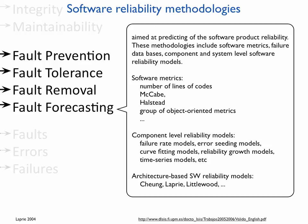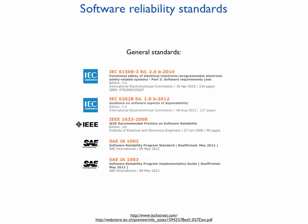Those are the four main groups of software reliability methodologies — fault prevention, fault tolerance, fault removal, and fault forecasting — and I hope this gives at least some intuition about what each involves. Now let's go further with software reliability standards.